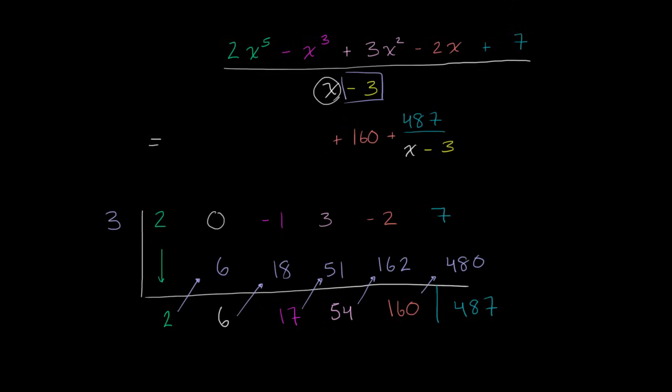Now this is our x term, so it's going to be 54x plus all of this. This is going to be our x squared term. So this is going to be 17x squared plus 54x plus 160 and all of that. And this is going to be our x to the third term. So this is going to be 6x to the third plus all of that. And then finally, this is our x to the fourth term, 2x to the fourth.